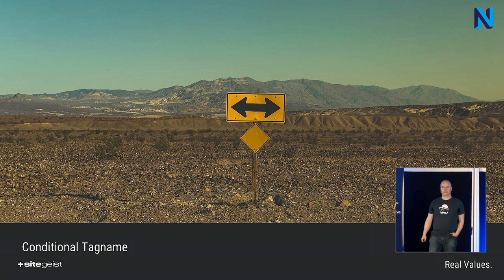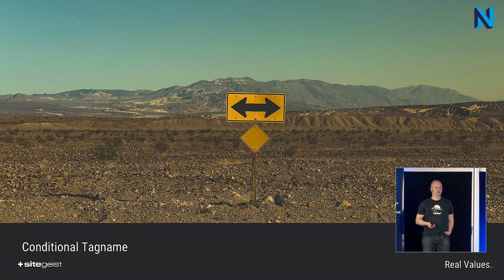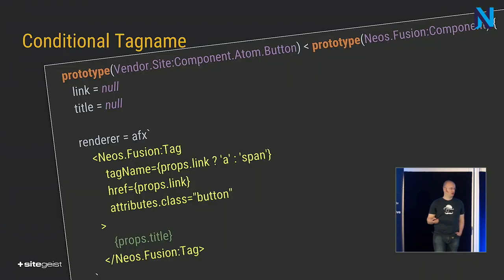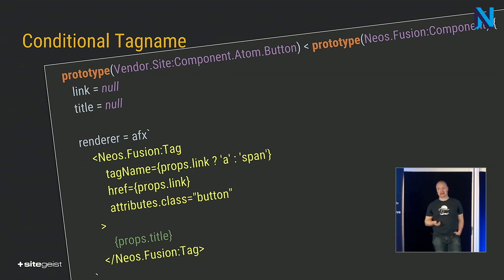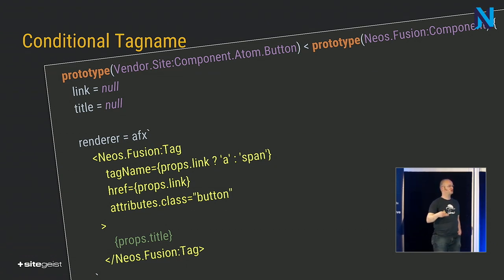The next pattern is called conditional tag name, mostly used for optional links but applicable in other cases as well. Common use is for buttons in the backend where you want to inline edit text without the editor jumping away. Instead of writing a tag directly in AFX, you use the Neos Fusion Tag prototype, make the tag name an expression, and decide: when a link is passed as prop, an A tag is rendered; otherwise it's a span. Very useful, and it's totally presentation code — it just reacts to whether there is a link or not.